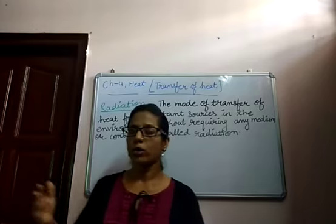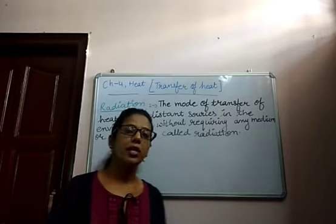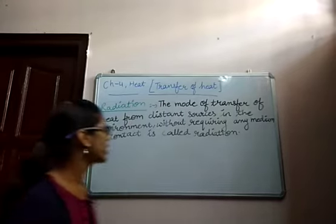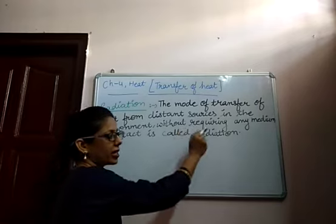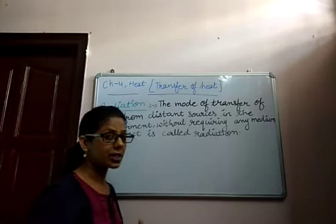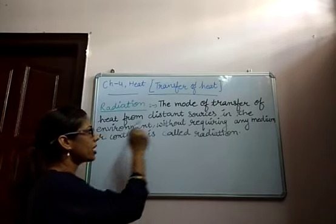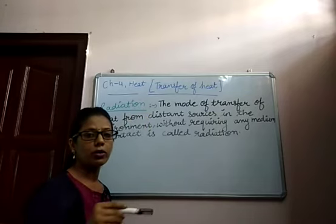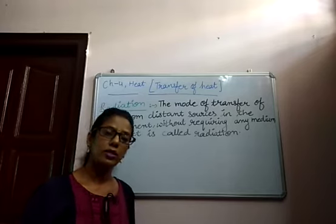For transferring heat from the sun to the earth, there is another method known as radiation. By the radiation method, heat can easily transfer from the sun to the earth. Radiation means the mode of transfer of heat from distant sources in the environment without requiring any medium or contact. Because we are not in direct contact with the sun and the sun is a very distant source, but still we are getting heat energy from it. In the radiation method, no medium is required — no solid, no liquid, and no gas. Without any medium or direct contact, heat can easily transfer from sun to earth.